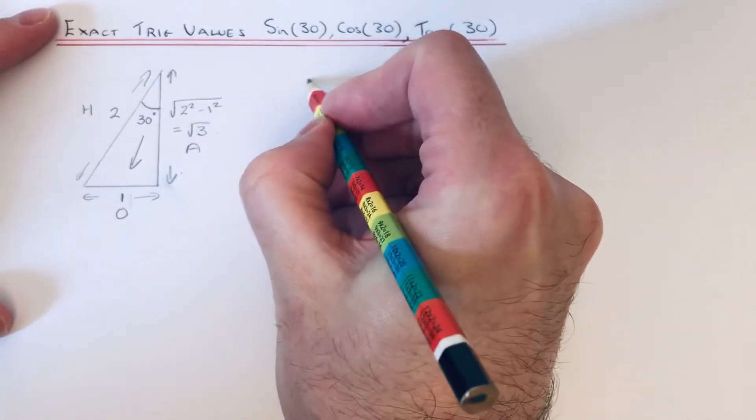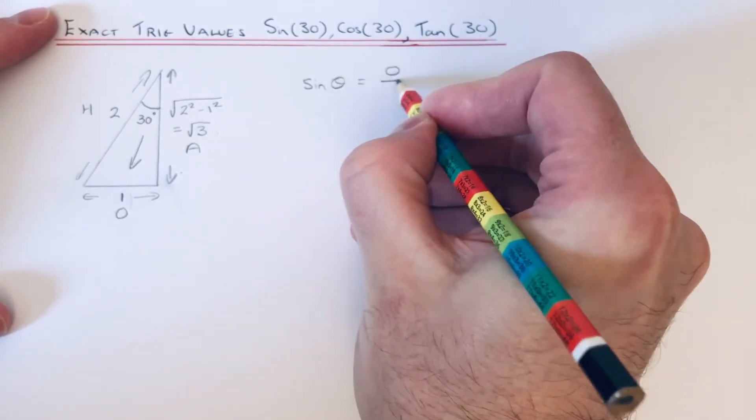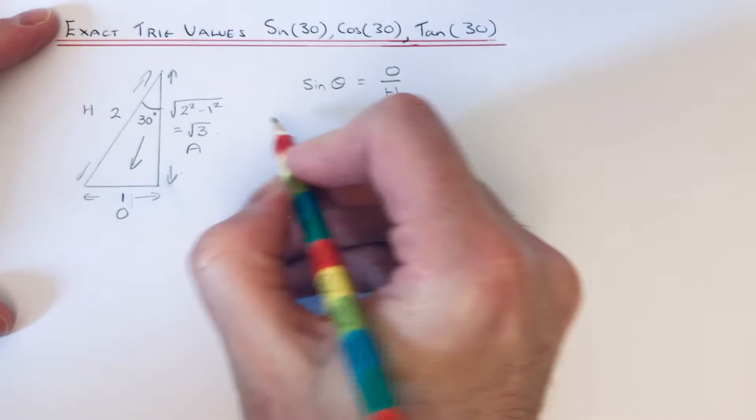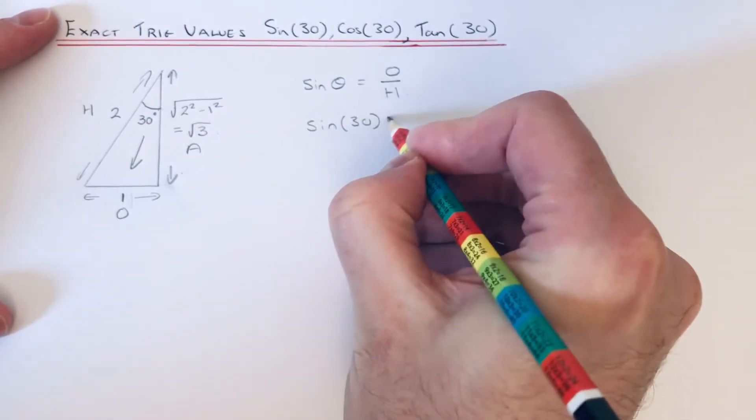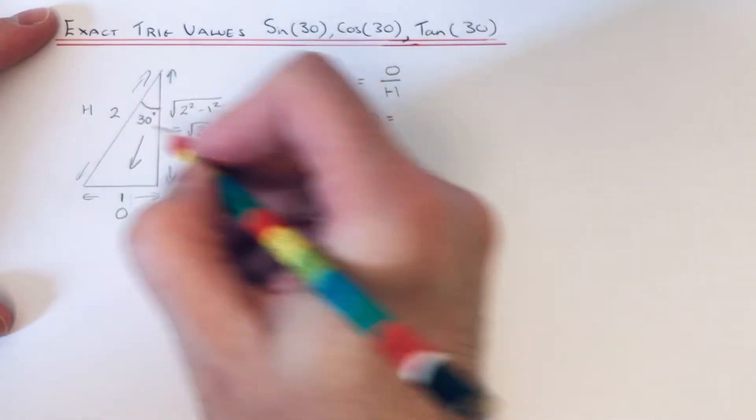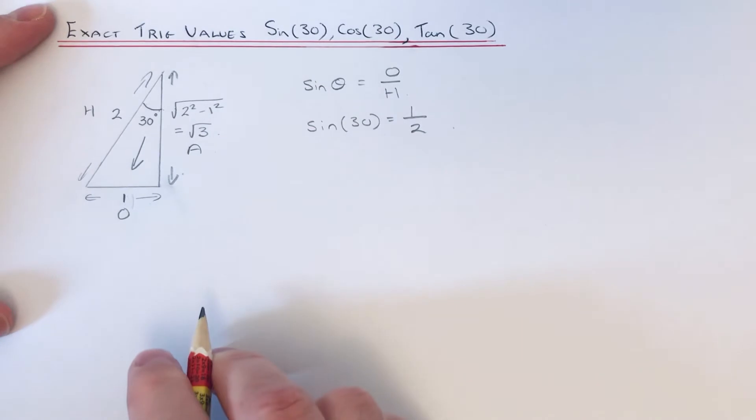Our formula for sin is opposite over hypotenuse. So if you substitute our numbers into the formula, sin(30°) is the opposite over hypotenuse which gives an answer of one half.